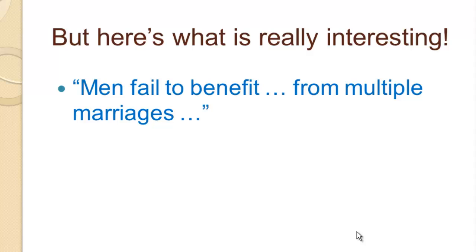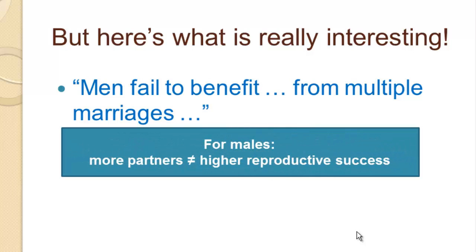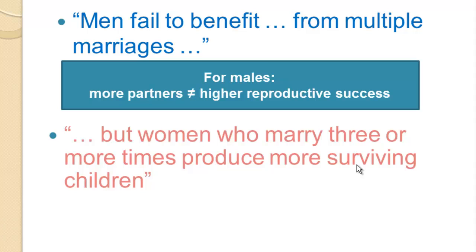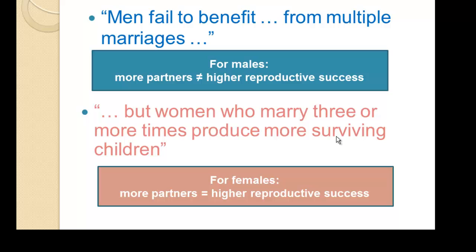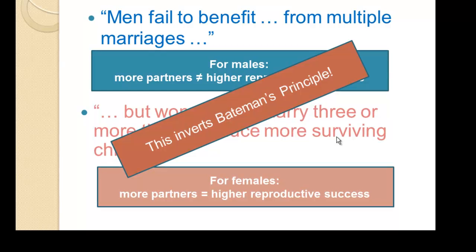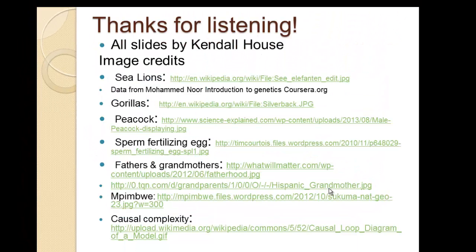What is most interesting is that Borgerhoff Mulder found that men failed to benefit from multiple marriages — more partners did not translate into higher reproductive success for males. However, women who married three or more times had more surviving offspring: their fertility did not increase, but their reproductive success did. This inverts Bateman's principle. The takeaway is that we should not reduce the complexity of human variation, and that measures and data collection matter — and often that data can surprise us.